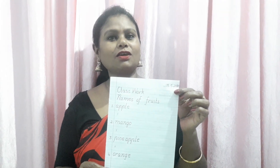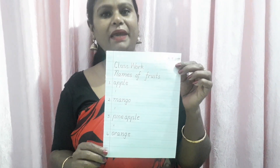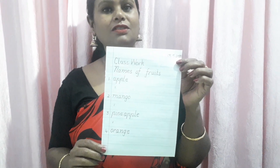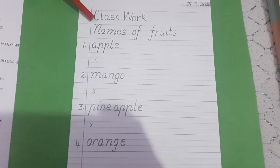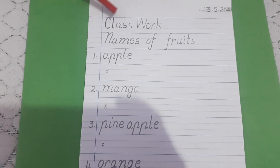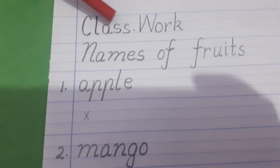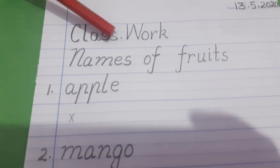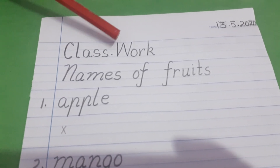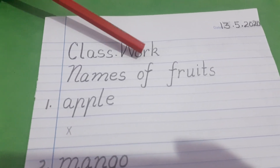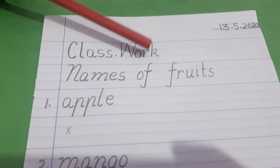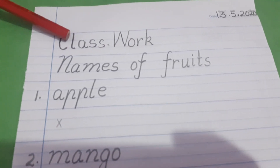Well children, this is your four-line copy, and this is the page that you are going to write in. Just have a look at it carefully. This is the way you are going to write class work. C in these three lines, L in these three lines, A in the center of these two lines, S and S in between the lines. Class. Work. W will be written in these three lines, O in these two lines, R in these two lines, and K will be used in these three lines. So you write class work.